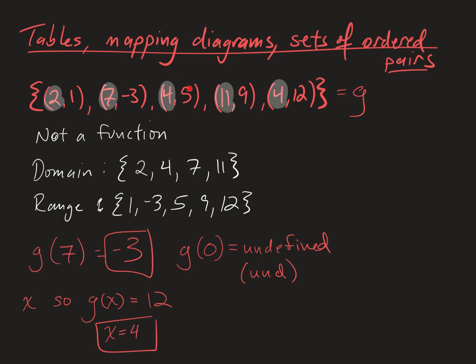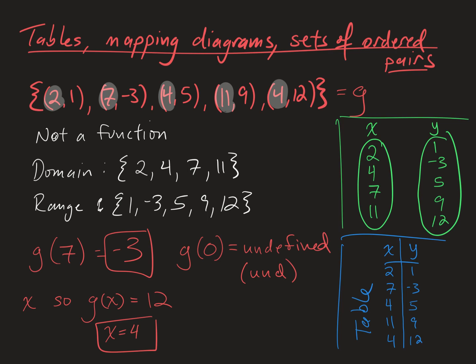Finally, tables and mapping diagrams are just different ways to represent this information. So a table of this information might look like this, and you can see each row here corresponds to an ordered pair in the set of ordered pairs. The only other thing I need to talk about is a mapping diagram. This is how the mapping diagram starts. You have an x bubble with all the elements of the domain. No need to repeat the 4, we just need to represent it one time. And a y bubble with all the elements of the range.